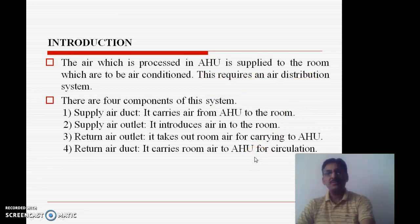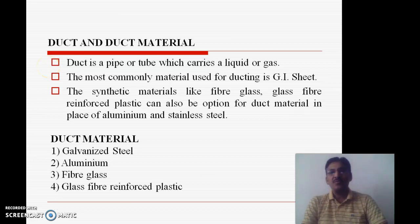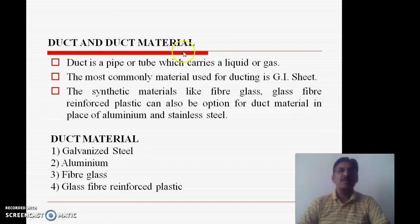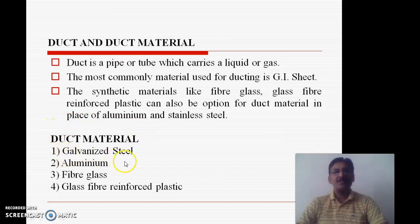In this air distribution system, the design of the duct is very important — essentially finding the diameter of the duct. Before starting this design, it is necessary to understand what type of duct material is used. A duct is a pipe or tube which carries liquid or gas. The most commonly used material for ducting is galvanized iron (GI) sheet. Synthetic materials like fiber glass and glass fiber reinforced plastic can also be used in place of aluminum and stainless steel. So the basic duct materials are galvanized steel, aluminum, fiber glass, and glass fiber reinforced plastic.